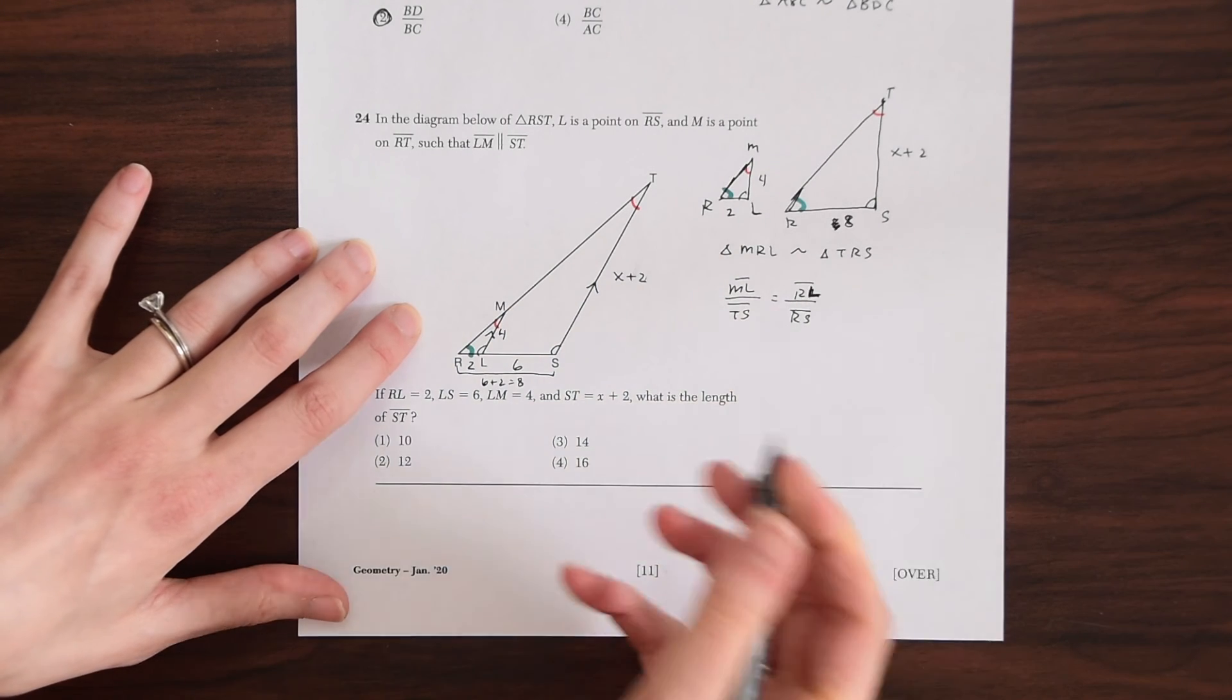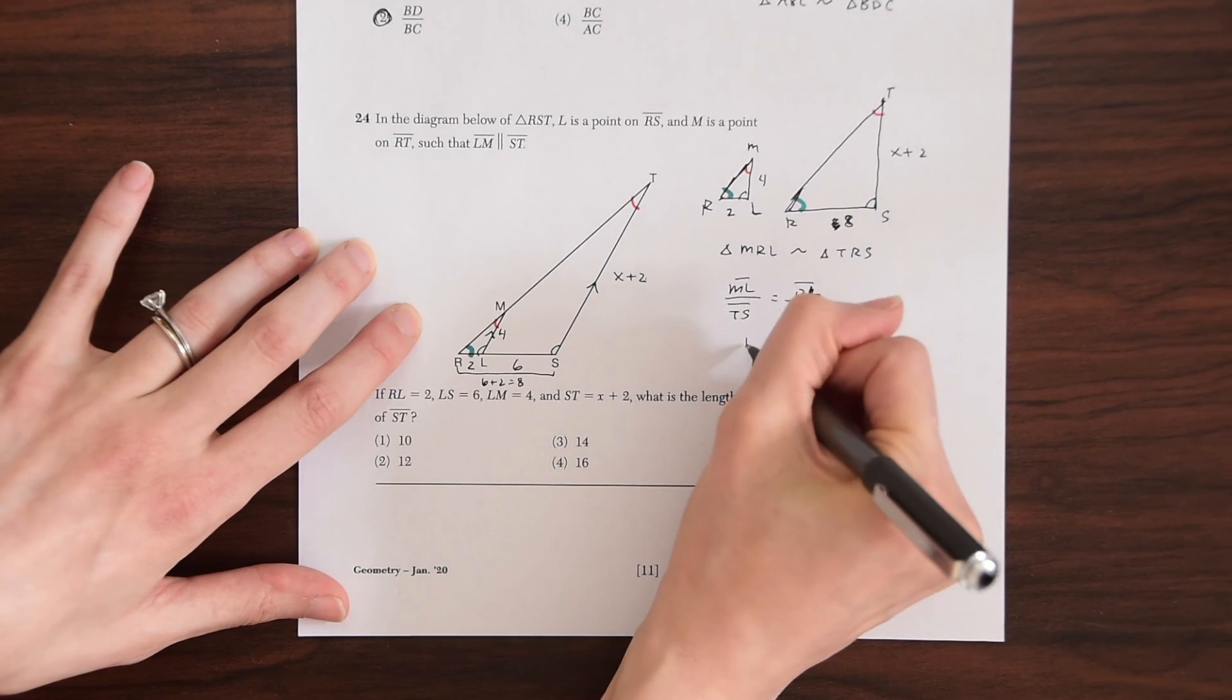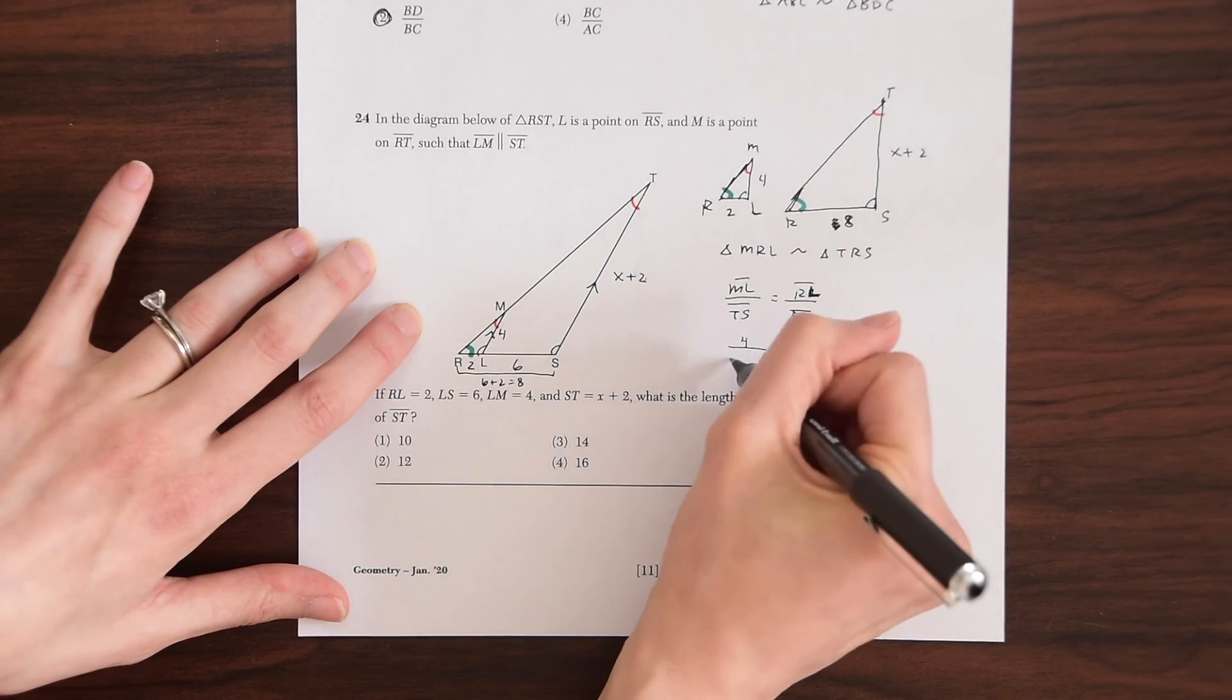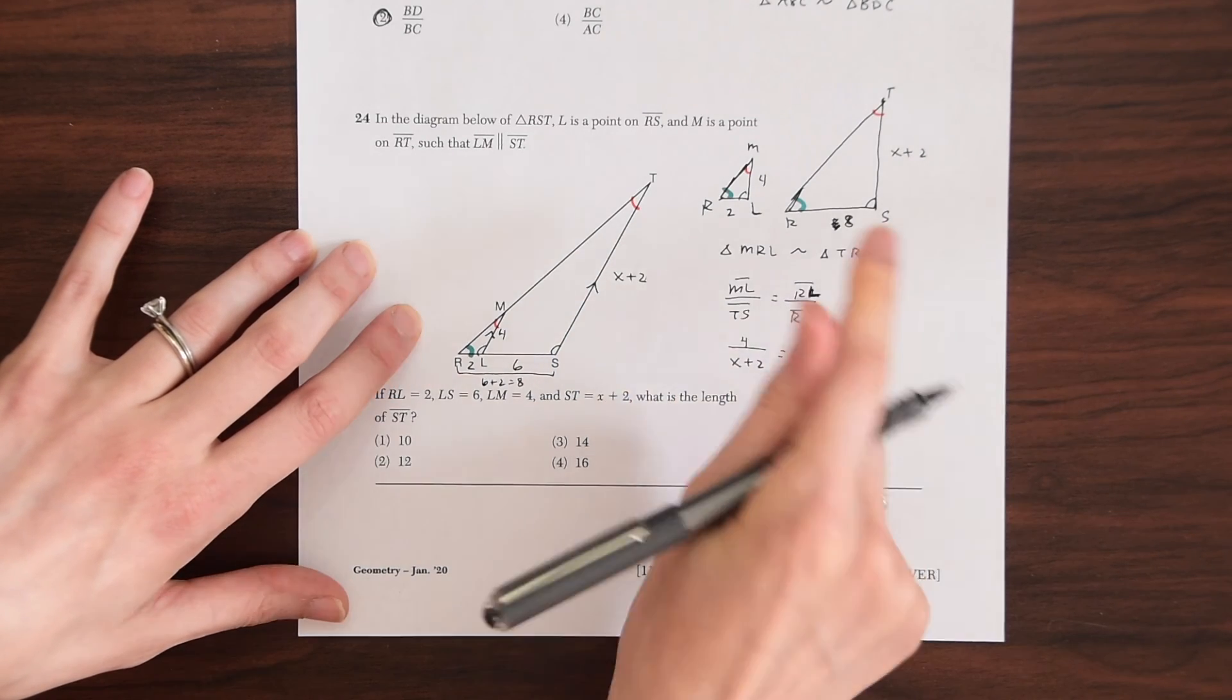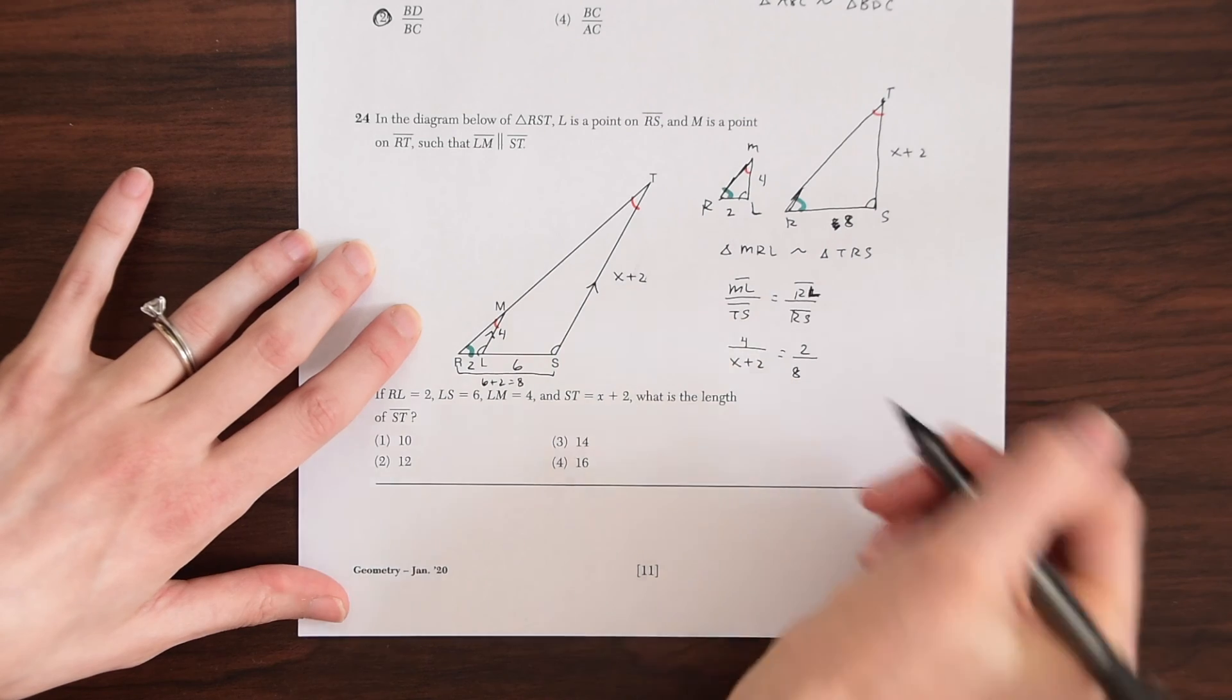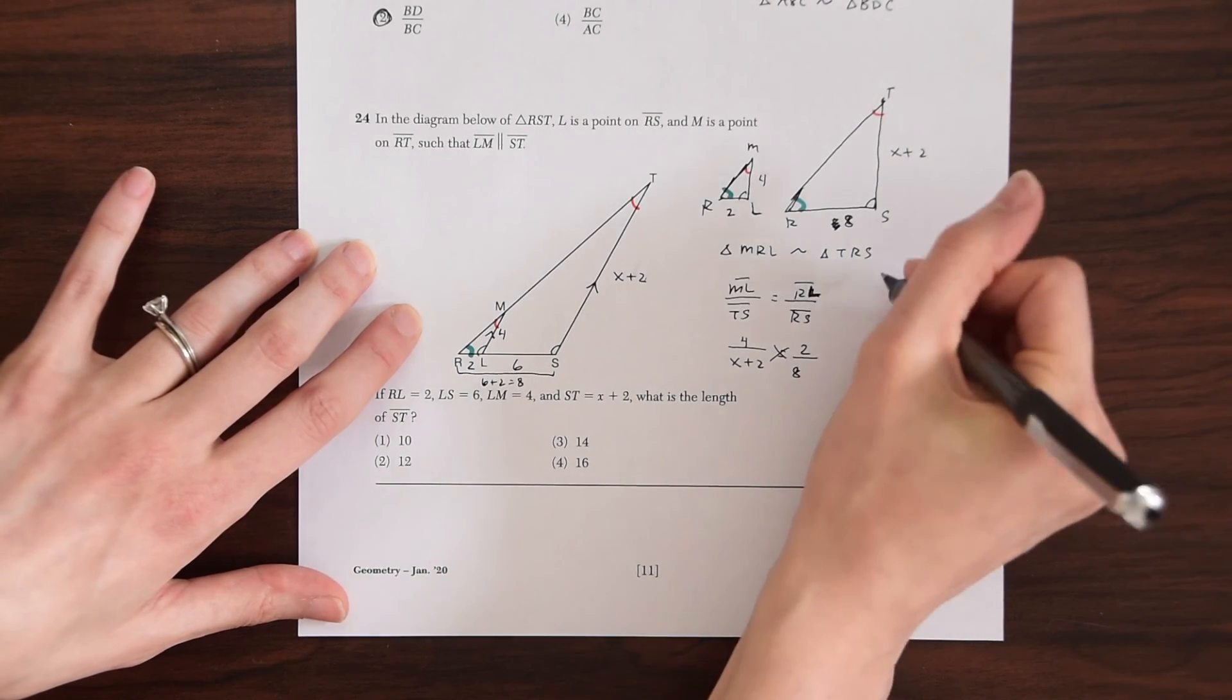And now we're just going to fill in the values of these. So ML is 4, TS is X plus 2. And then this is equal to RL which is 2 over RS which is 8. And then we could just cross multiply and solve for X.